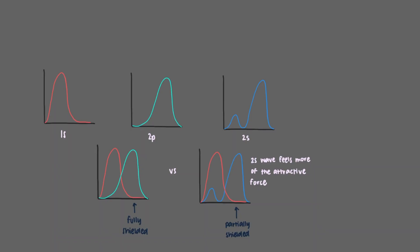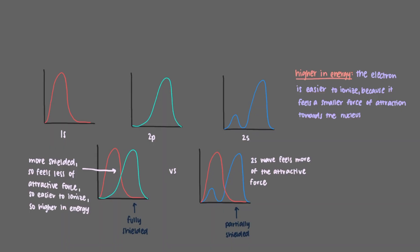So now let's go back to our original question. Which electron wave is higher in energy, 2s or 2p? When we say that an electron is higher in energy, we mean that it is easier to ionize because it feels a smaller force of attraction towards the nucleus. We just said that the 2p wave is more shielded by the 1s electron wave than the 2s wave is, so the 2p wave feels less of the attractive force of the nucleus. Because it feels less of the attraction to the nucleus, it is easier to ionize and so it's higher in energy. So lithium's electron configuration is 1s2, 2s1.